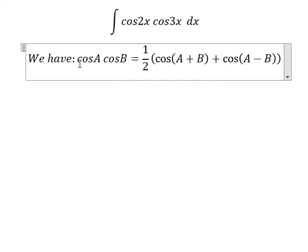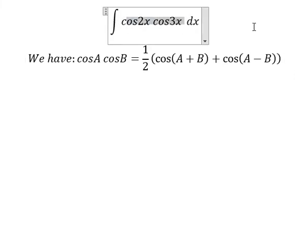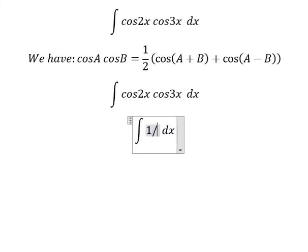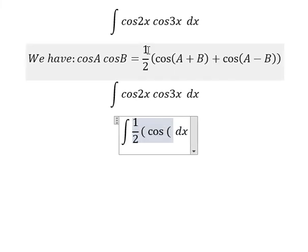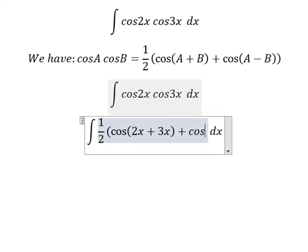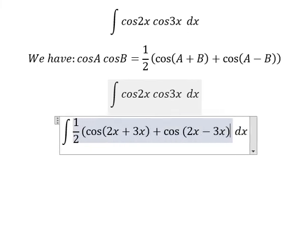So we apply this formula for this one. We have one-half cosine of A plus B, that's 2x plus 3x, plus cosine of 2x minus 3x.